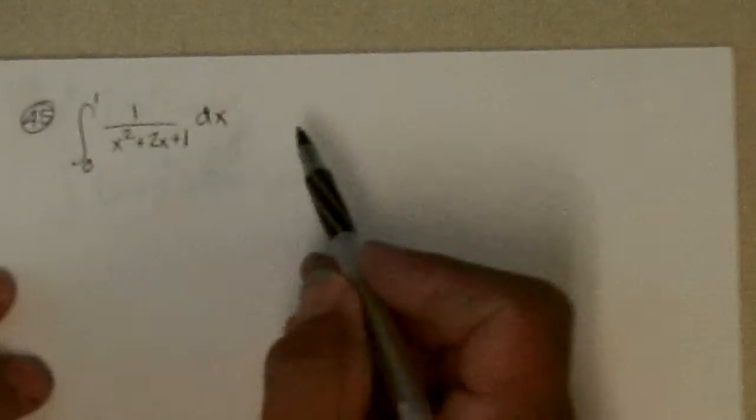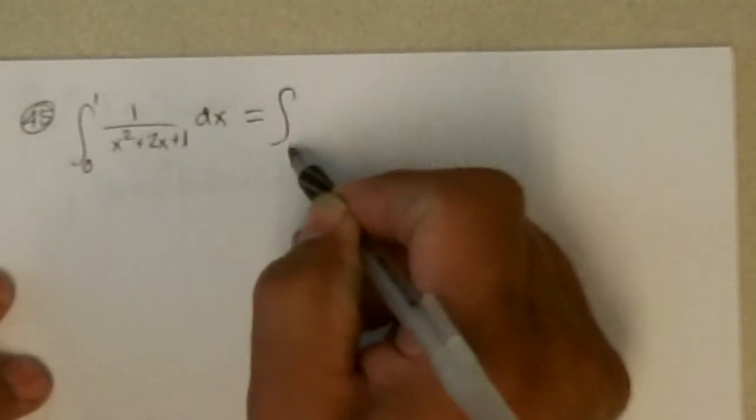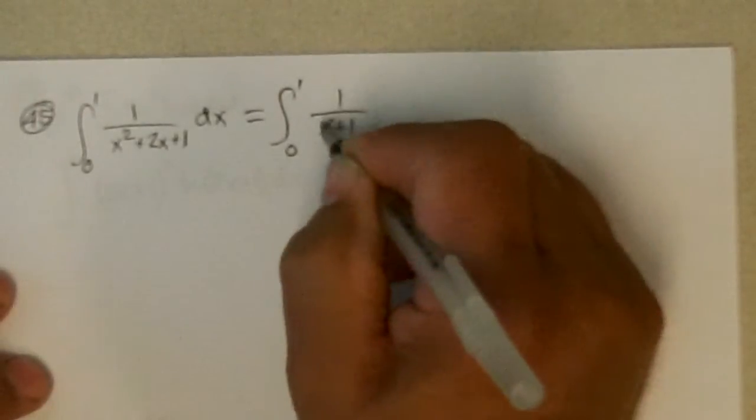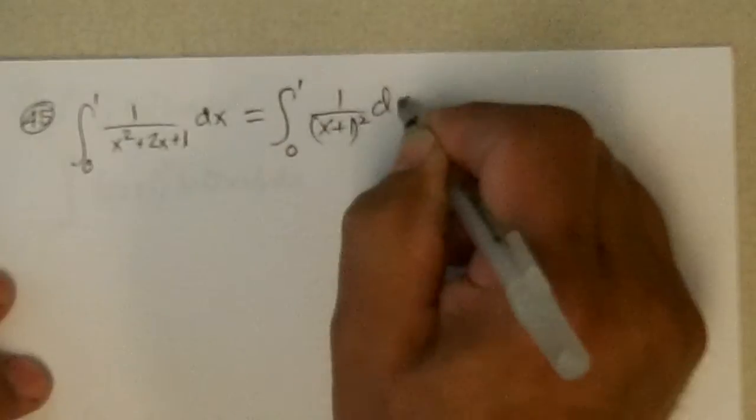45, we're supposed to find the integral of this. Well this happens to factor, so I don't need a table. That's 1 over (x+1) quantity squared, dx.